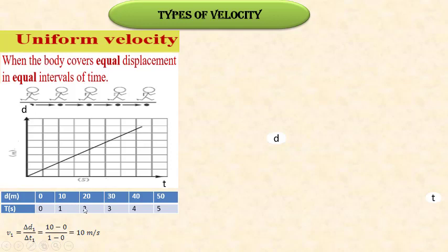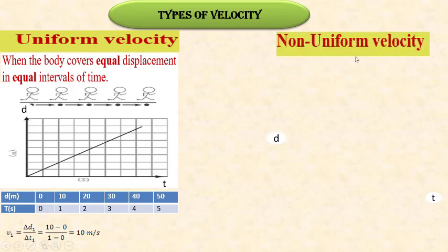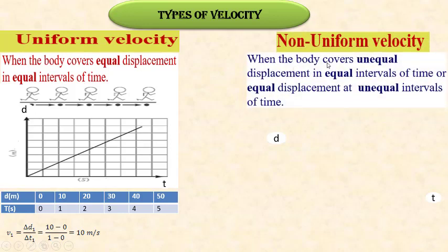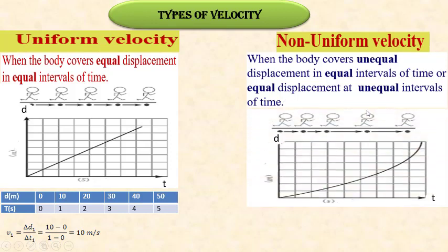When we calculate it, the velocity is 10 meters per second. We must note that uniform velocity is a velocity where the moving object has instantaneous velocity equal to its average velocity — the velocity at any instant also equals the average velocity. The second type is non-uniform velocity, where the body covers unequal displacement in equal intervals of time, or equal displacement at unequal intervals of time.